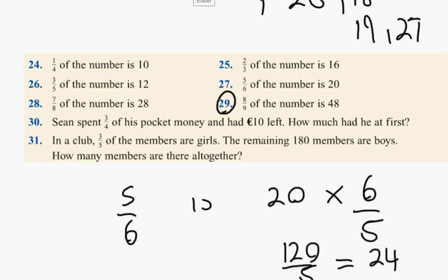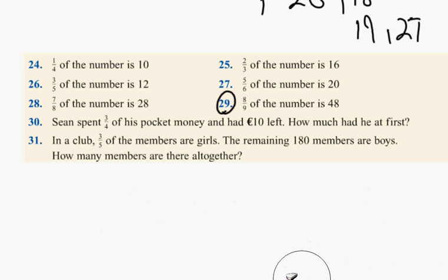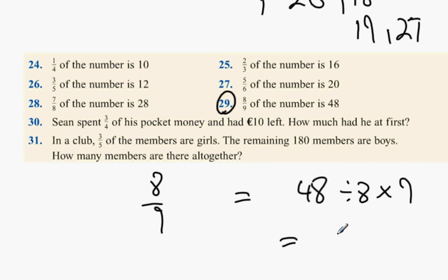Now, finally, 29. 29 is 8 ninths of the number is 48. So, Stephen, what do we do this time? You can divide by 8 and multiply by 9. And you get 6 times 9, which is 54.